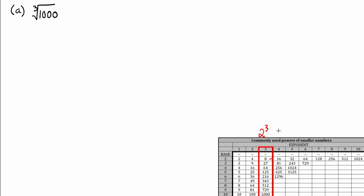27 is 3 to the third. The base is 3, the exponent is 3, 3 to the third is 27. The next entry, the base is 4, the exponent is 3, 4 to the third is 64.